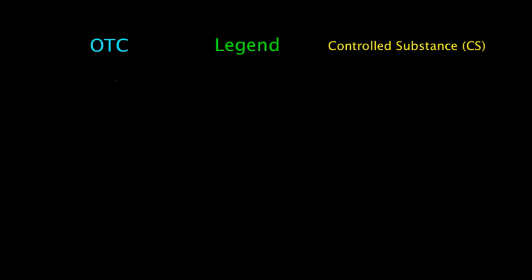In this video we're going to talk about the legal classes of drugs. As we can see right here, there are going to be three different classes of drugs: you have the OTC — which stands for over-the-counter — you have the legend, and you have controlled substances. We're going to go through one by one and explain what each one is.